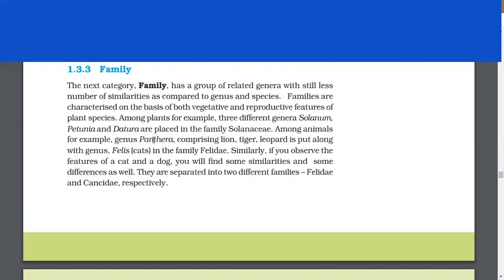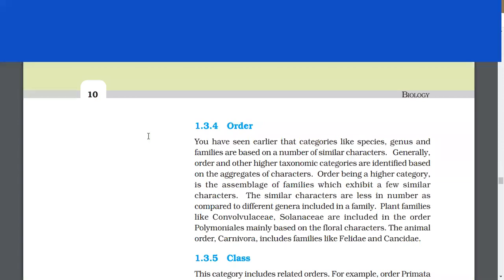Among animals, for example, genus Panthera comprising lion, tiger, and leopard is put along with genus Felis in the family Felidae. Similarly, if you observe the features of a cat and a dog, you will find some similarities and some differences. They are separated into two different families: Felidae and Canidae, respectively.